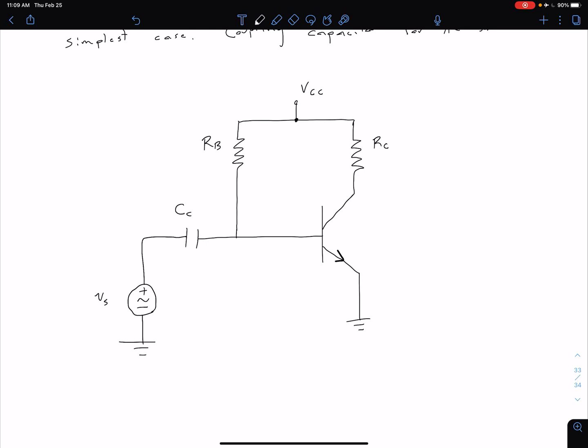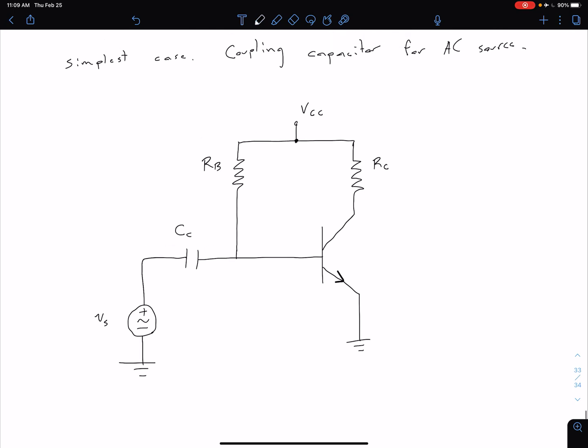We now have our AC source, which is over here, connected to the base of our transistor via this coupling capacitor C sub C.